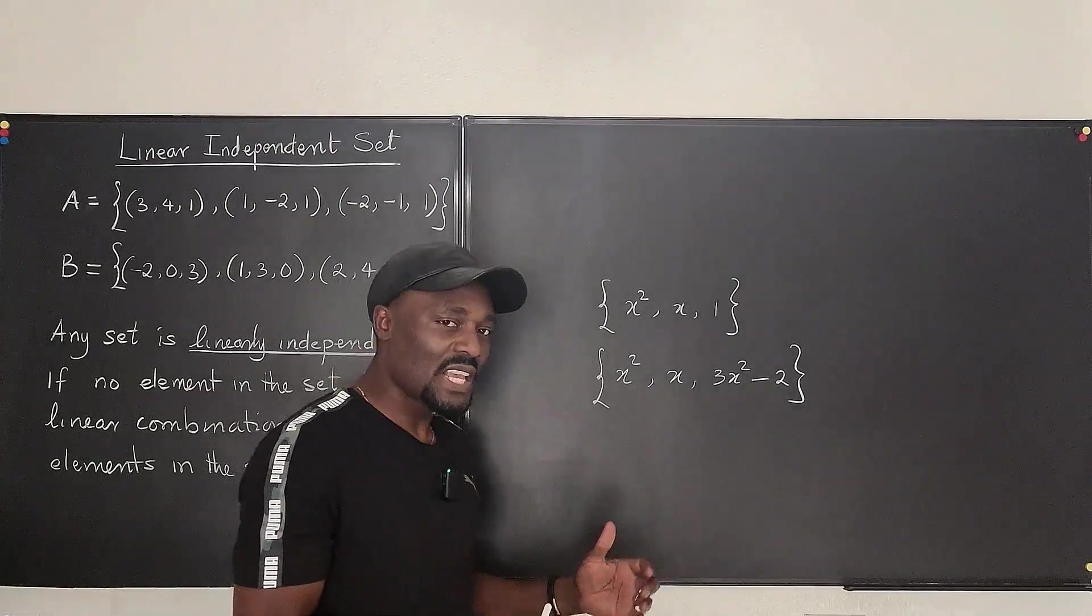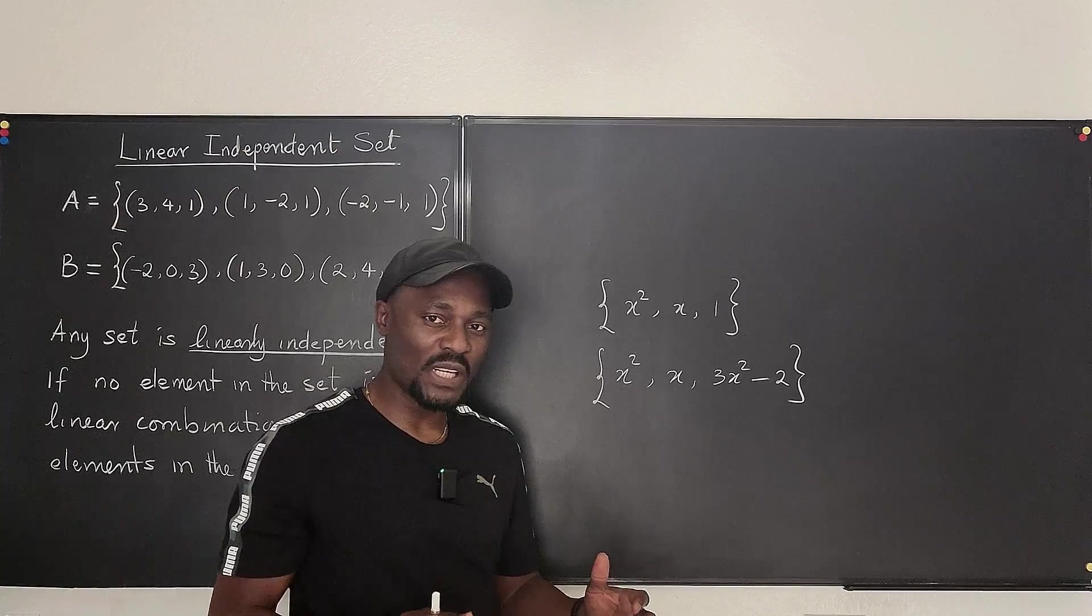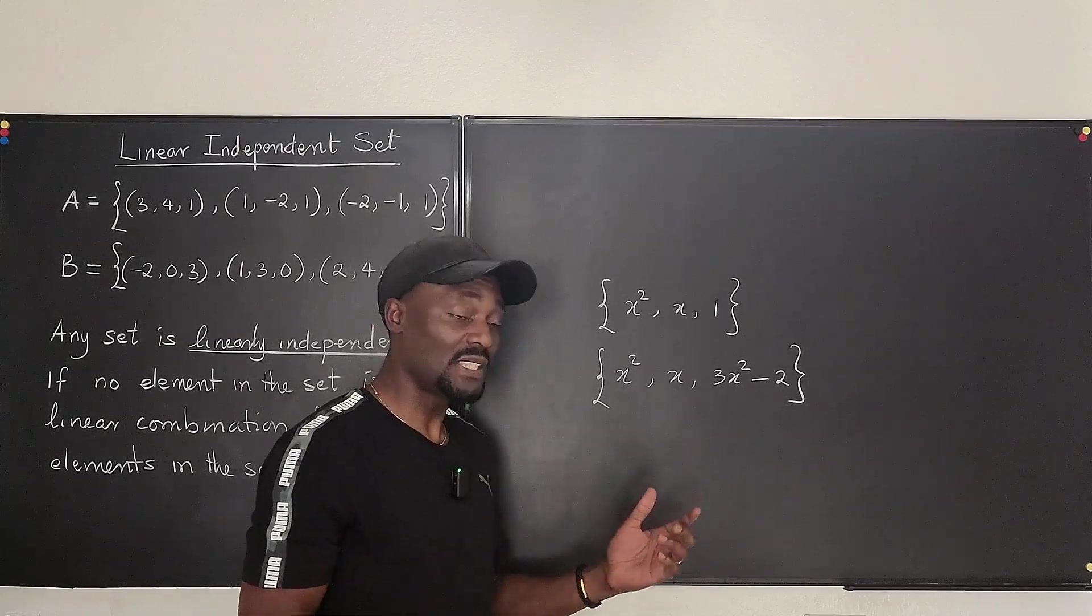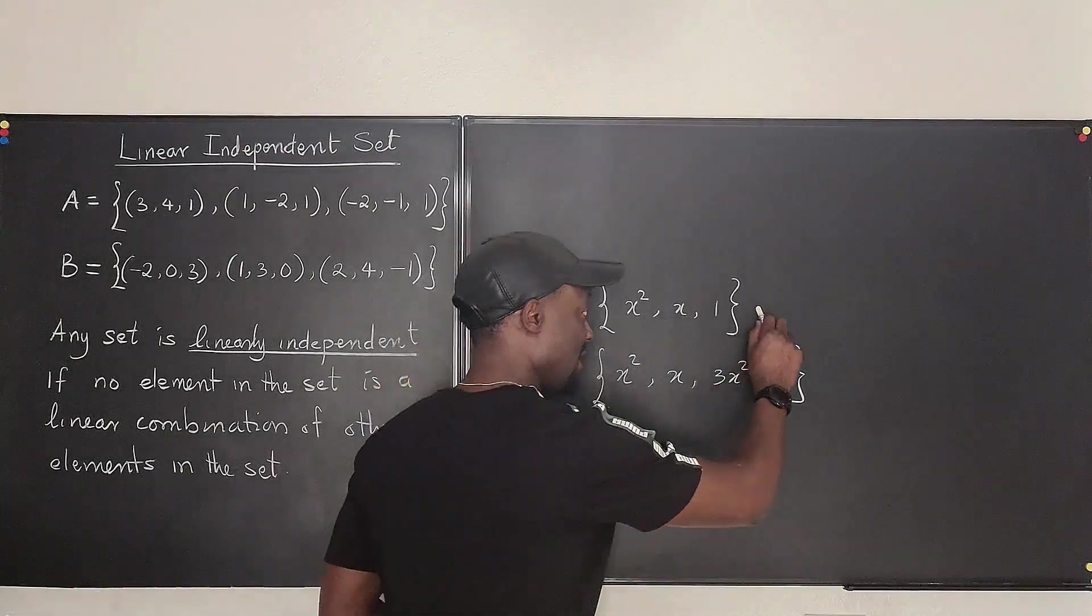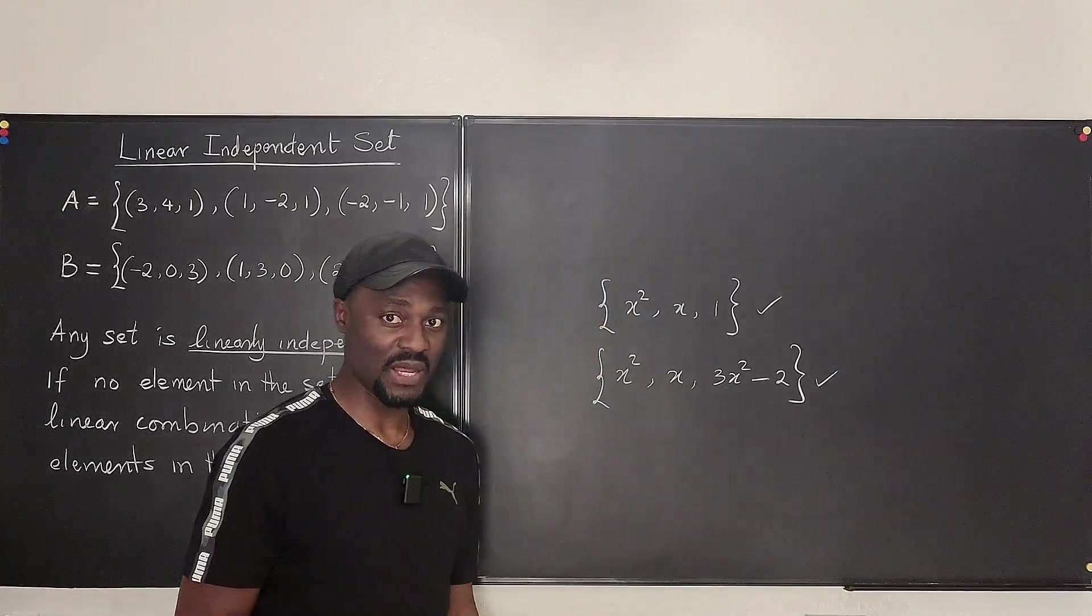Now, if one thing is not a duplicate or a linear combination of the other two, the set is linearly independent. So this set is linearly independent. This set is linearly independent. Let's take one more.